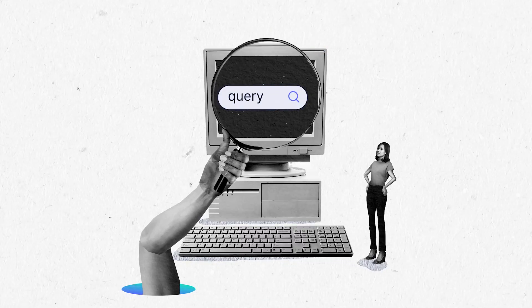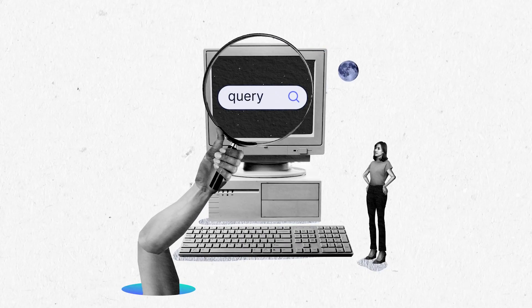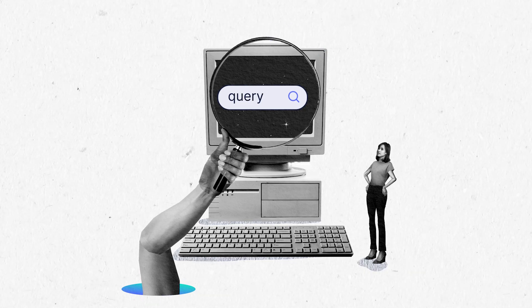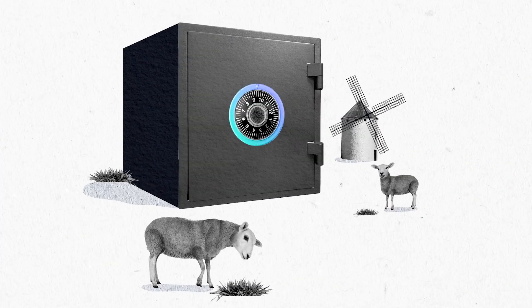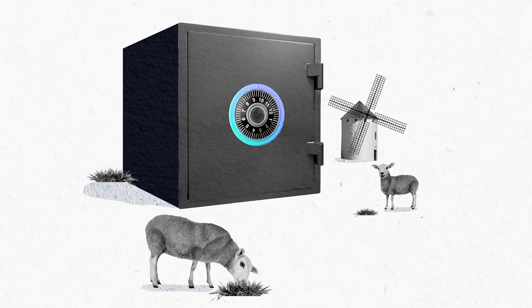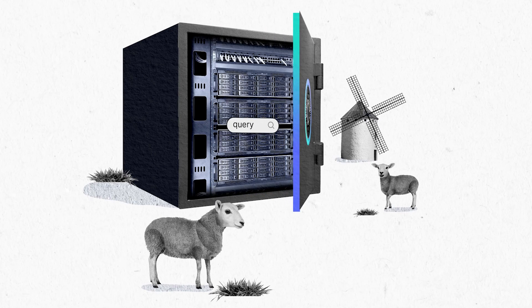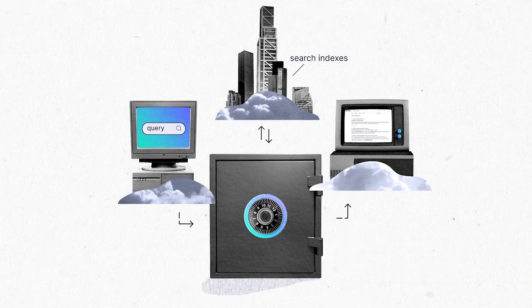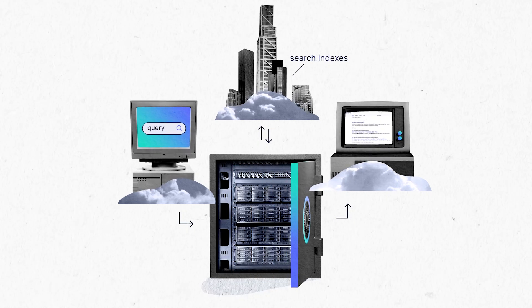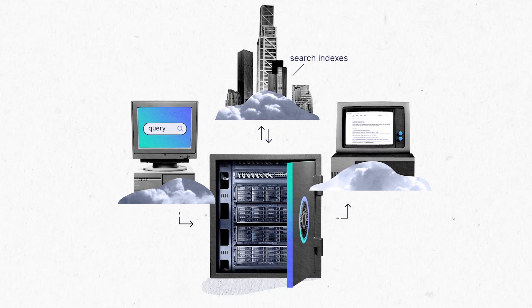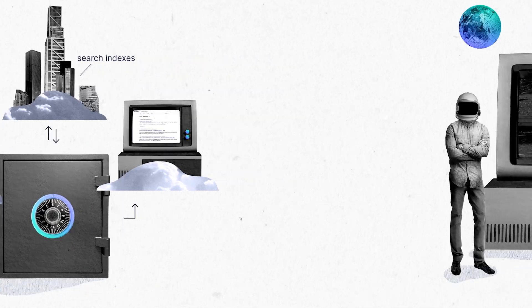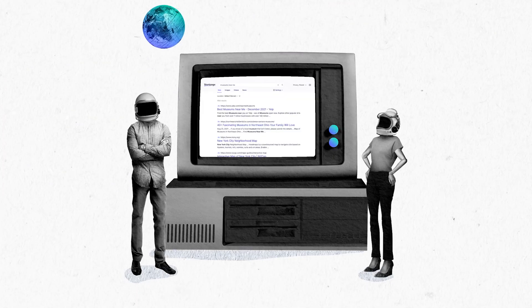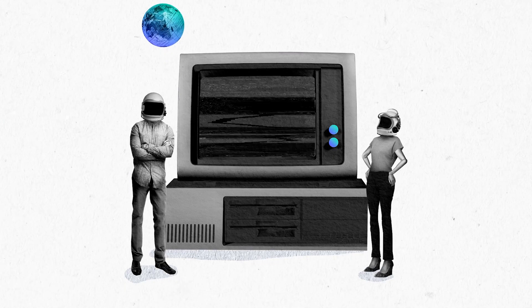The flow of a user request through Startpage starts with them coming to our website and typing a query into the search box. The request that the user enters on our page goes to a set of servers that we own and operate that anonymizes as much of the request as possible. So as far as they're concerned, it's really just a Startpage server making the request on someone's behalf. We send them just enough information that they can actually fulfill the request, but they don't have any information about who the user is that made the request.